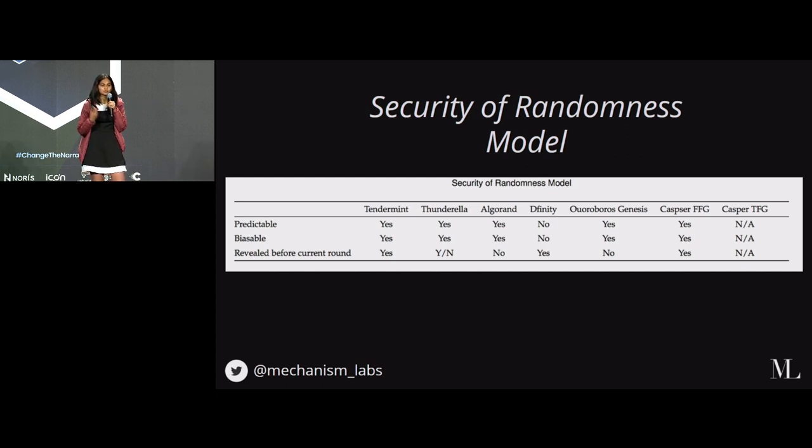Oftentimes people use some sort of randomness source to figure out who is going to be the proposer or creator of the block and who is going to be the verifier. Some really good properties of any randomness scheme that you want is you want it to be not predictable, not biasable. That basically means you don't want anyone either in protocol or out of protocol to know what the randomness seed is ahead of time, nor do you want any of these people to have the capability of tampering what this randomness seed is ahead of time.